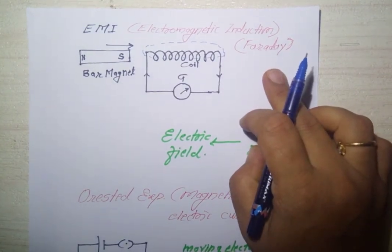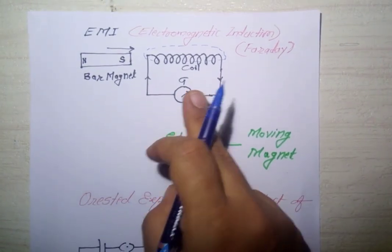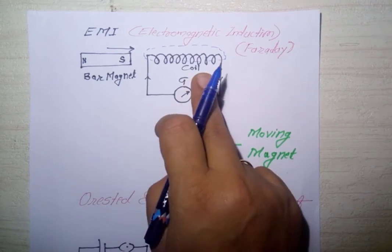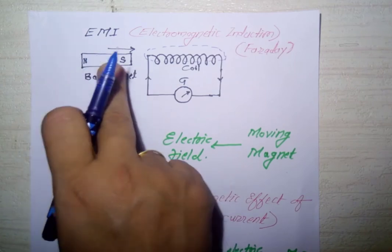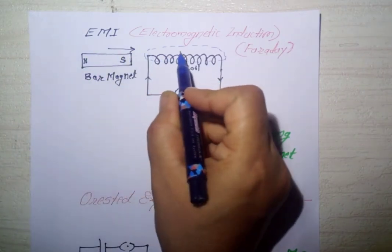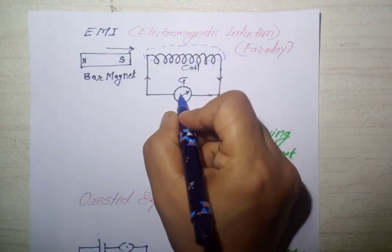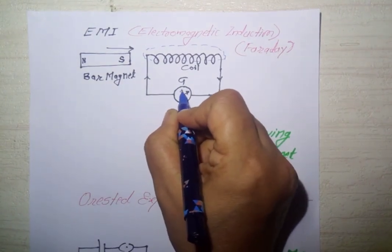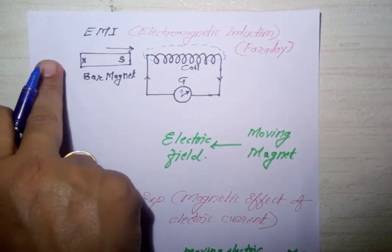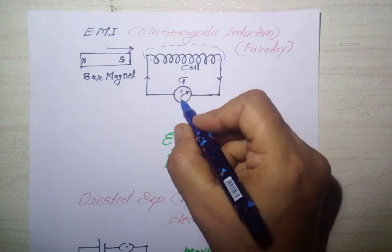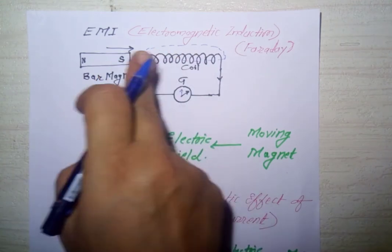Faraday was the scientist who proved, in his coil and magnet experiment, that when he takes one coil with a galvanometer connected to it as a closed loop, and a bar magnet with N and S poles, when the bar magnet is moving towards the coil - initially with no magnet the galvanometer shows zero deflection, no current flows. But when we move the magnet towards the coil, the galvanometer shows some deflection and current flows through the coil.